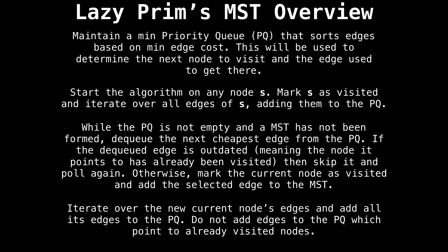Let's start by looking at the lazy version, just because it's slightly easier to implement. Here's the general idea. Maintain a priority queue that sorts edges based on minimum edge cost. This priority queue is used to tell you which node to go to next and what edge was used to get there. Then the algorithm begins and we start on any starting node s and mark s as visited and iterate over all the edges of s and add them to the priority queue.